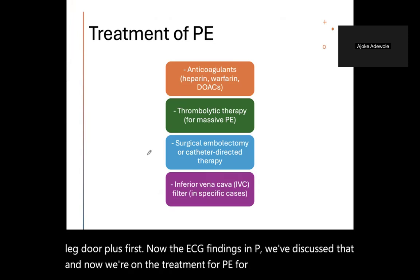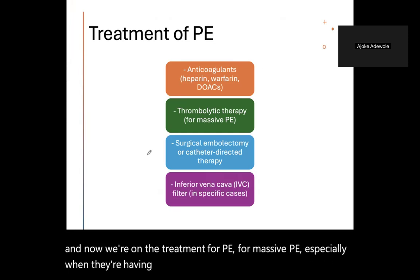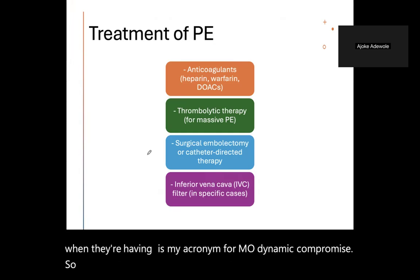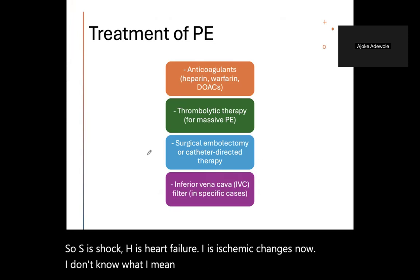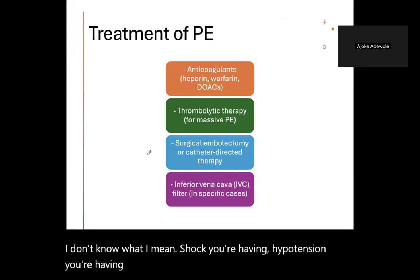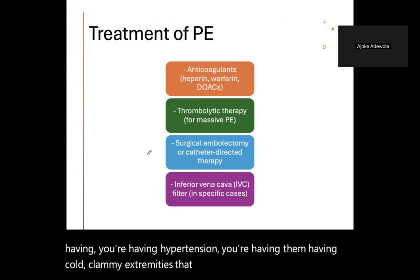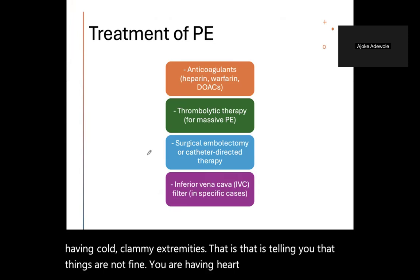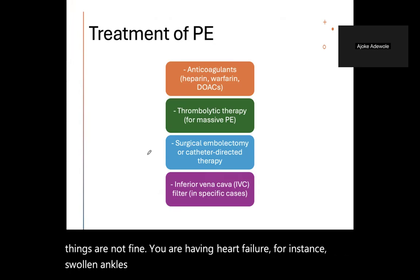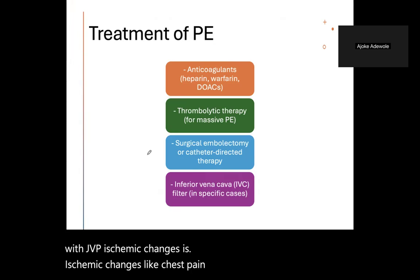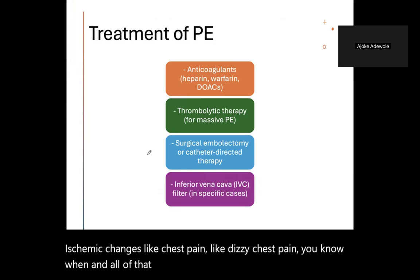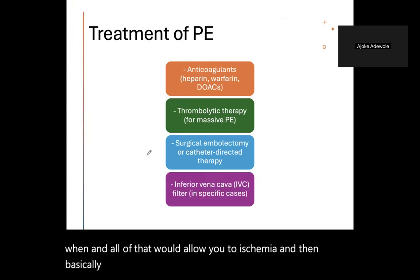For treatment: in massive PE, use my acronym SHIT — S is Shock, H is Heart failure, I is Ischemic changes, T is Tachycardia. Shock means hypotension and cold clammy extremities. Heart failure includes swollen ankles and raised JVP. Ischemic changes indicate hemodynamic instability. These findings tell you the patient is not hemodynamically stable. In massive PE, do thrombolysis immediately — alteplase 100mg over two hours — with ICU and cardiology input.